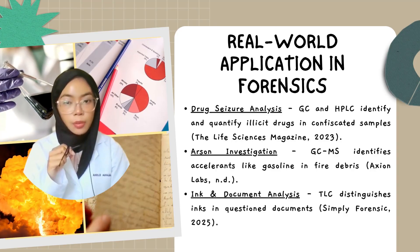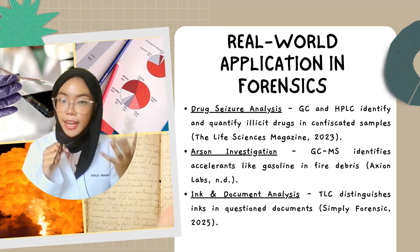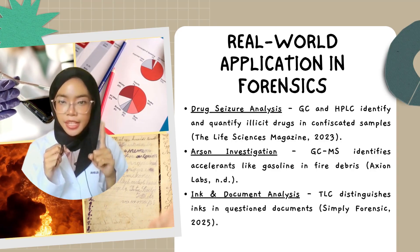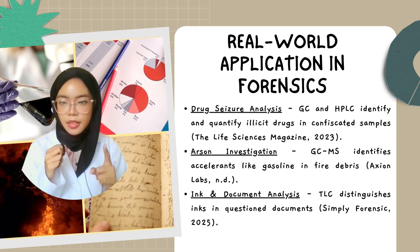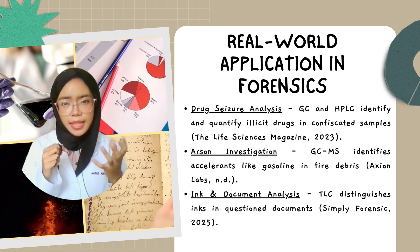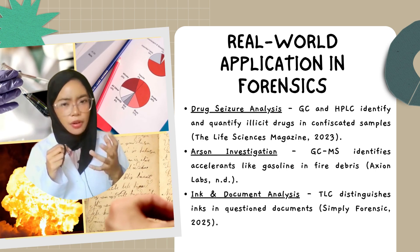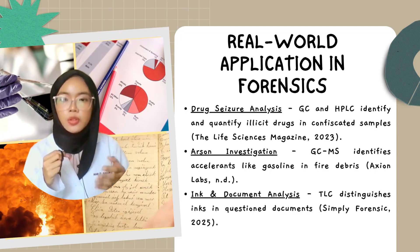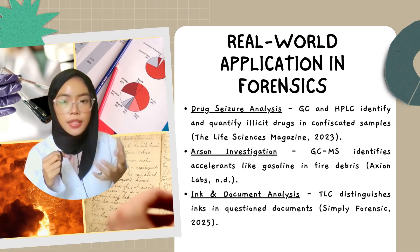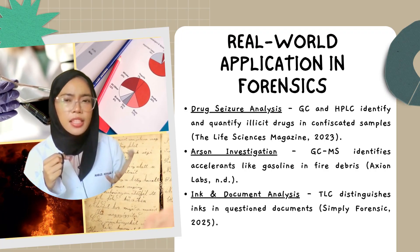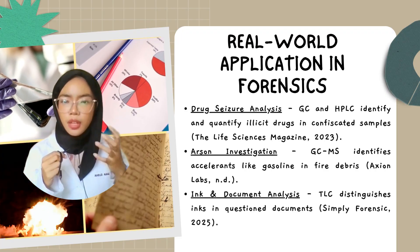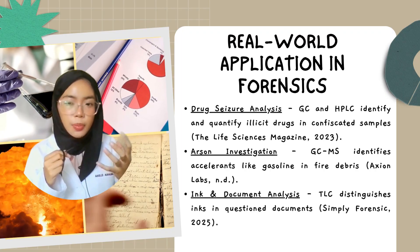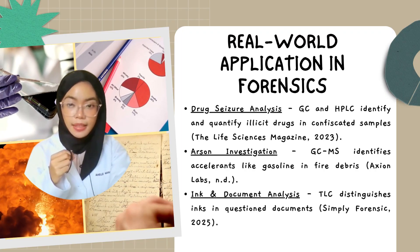Let's explore how chromatography is applied in real forensic investigation. The first application is drug identification in seized substances. When police find suspicious powders or pills, techniques like GC and HPLC are used to identify drugs such as cocaine or methamphetamine. This confirms not only the presence of the drugs but also their purity, which is important in legal cases.